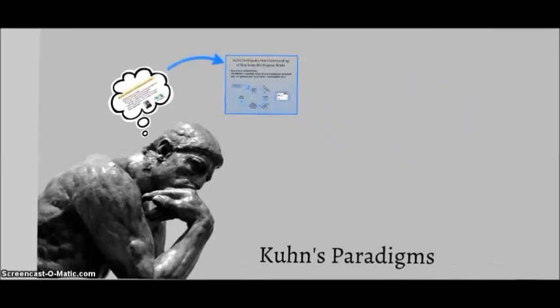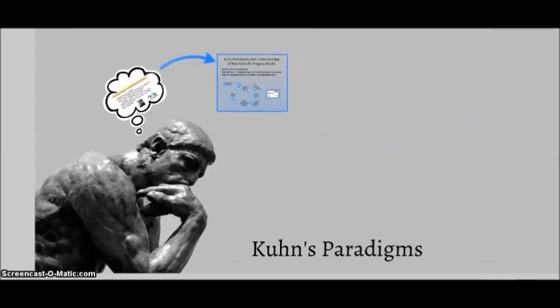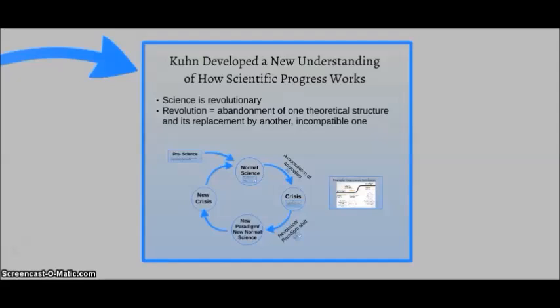Following his rejection of the current framework, Kuhn developed a new understanding of how scientific progress works. His approach was based on the revolutionary nature of science. Here, revolution means the abandonment of one theoretical structure and its replacement by another incompatible one.